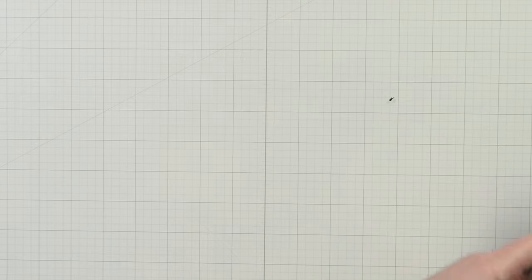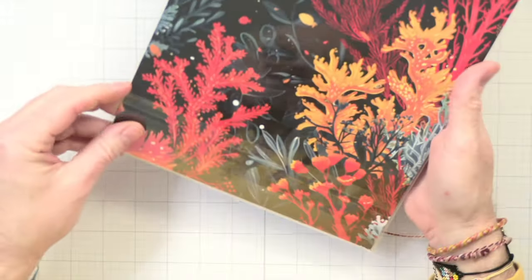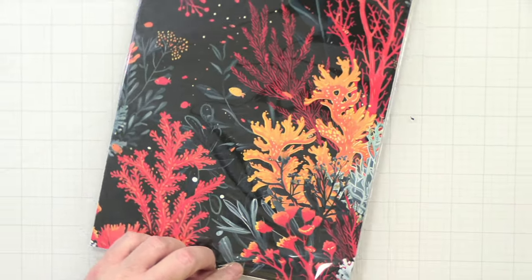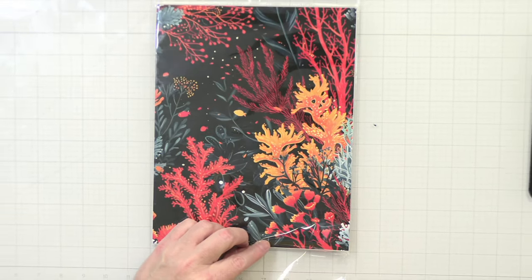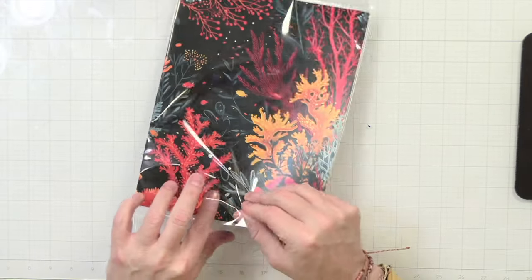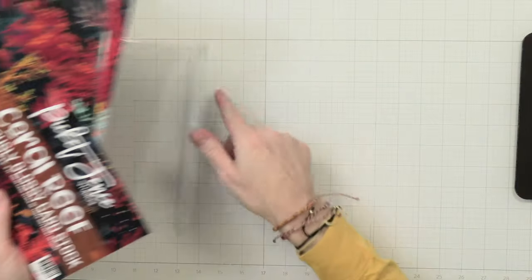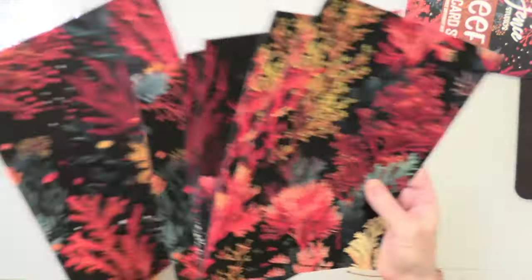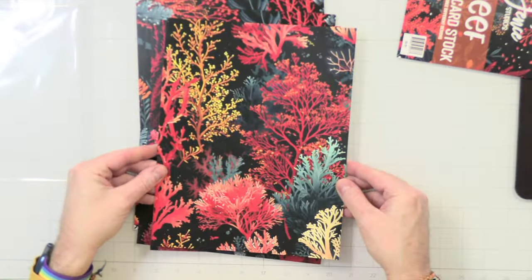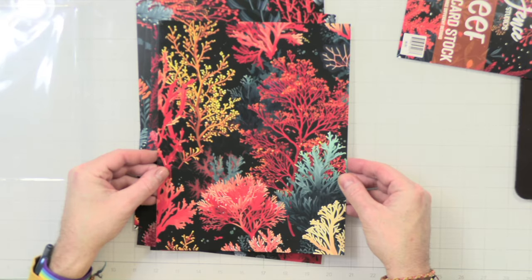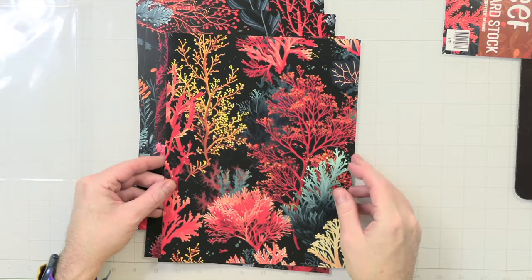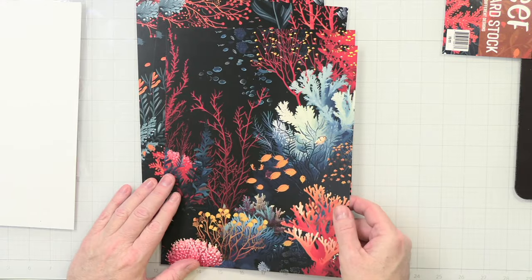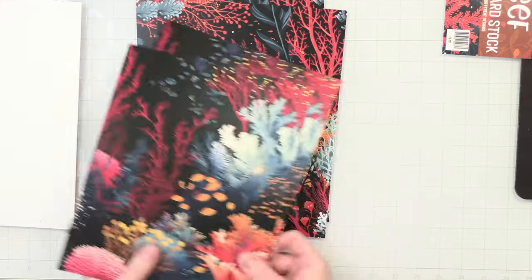Alright, now let's get to the eight and a half by eleven, which this looks the same as the smaller versions. So let's get this pulled out. Let's get a little bit wider here so we can get the full thing here. There we go. Alright, so it looks like we get two of each. So we have this one, so pretty. There we go. Then we have these two. And then these two. Really nice.